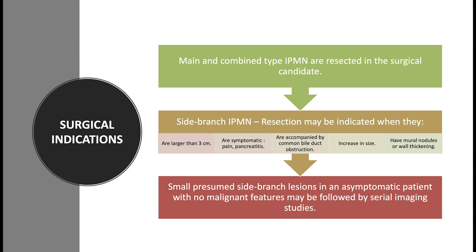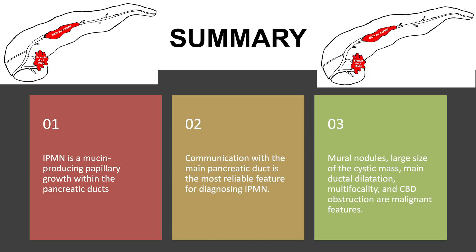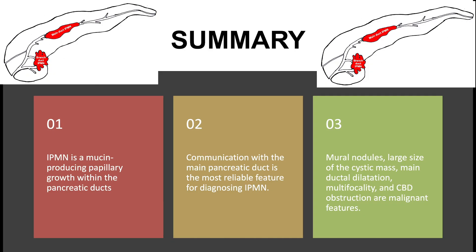In summary, IPMN is a mucin-producing papillary growth within the pancreatic ducts. Communication with the main pancreatic duct is the most reliable feature for diagnosing IPMNs. Malignant features include mural nodules, large cystic mass size, main ductal dilatation, multifocality, and CBD obstruction.